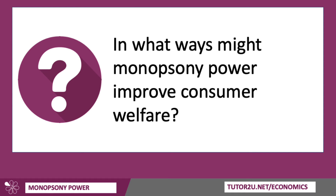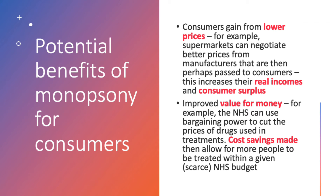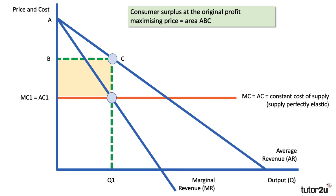How might monopsony power improve consumer welfare? Consumers might gain from lower prices. Supermarkets, for example, might negotiate better prices from manufacturers and pass those on to consumers, increasing their real incomes and consumer surplus. The NHS might use their bargaining power to cut the price they pay for drugs used in routine treatments, and cost savings then allow more people to be treated within a scarce NHS budget.